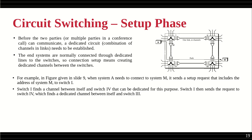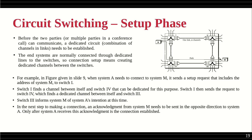Assuming the channels are free, switch four sends a request to switch three. Switch three is directly connected to machine M, so it informs machine M of system A's intention to communicate. So only at this point does M learn that A wants to communicate. The full request has propagated: A to switch one, switch one to switch four, switch four to switch three, and finally switch three to machine M.